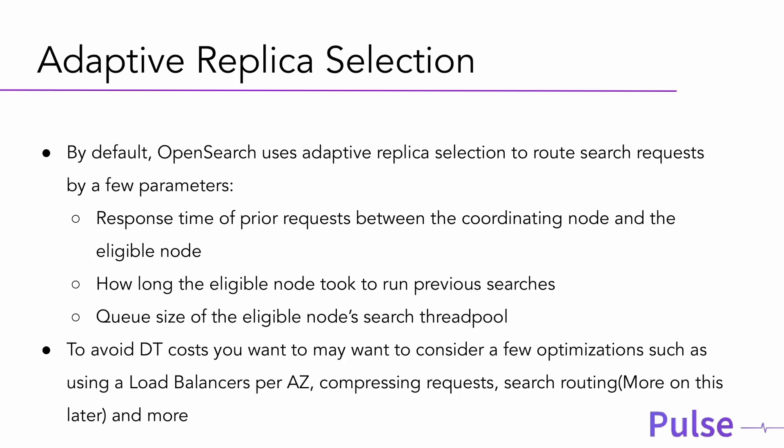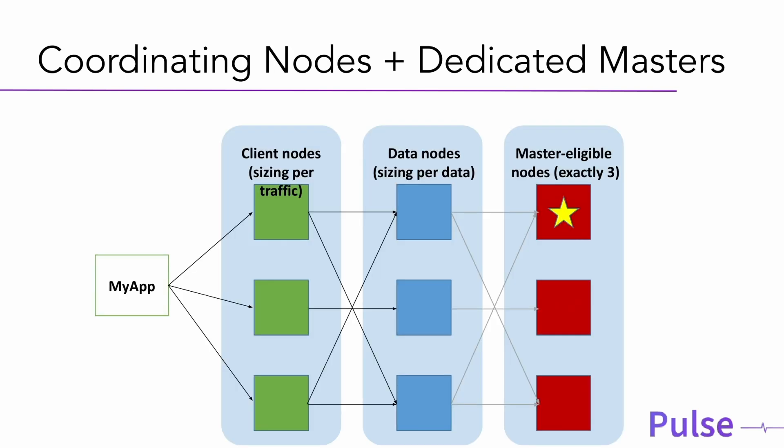OpenSearch has a lot of built-in optimizations for coordinating responses — for example, adaptive replica selection, which tries to route requests to the right replica that is closer and on a less busy node. There's a lot of intelligence going on to optimize coordination, and that's something we would monitor and optimize for.